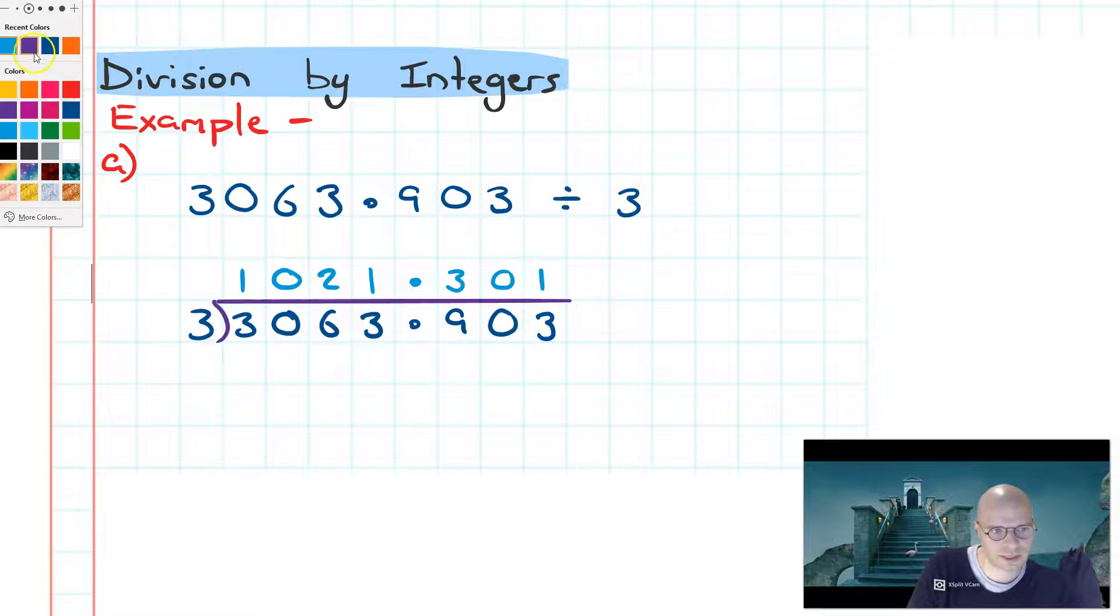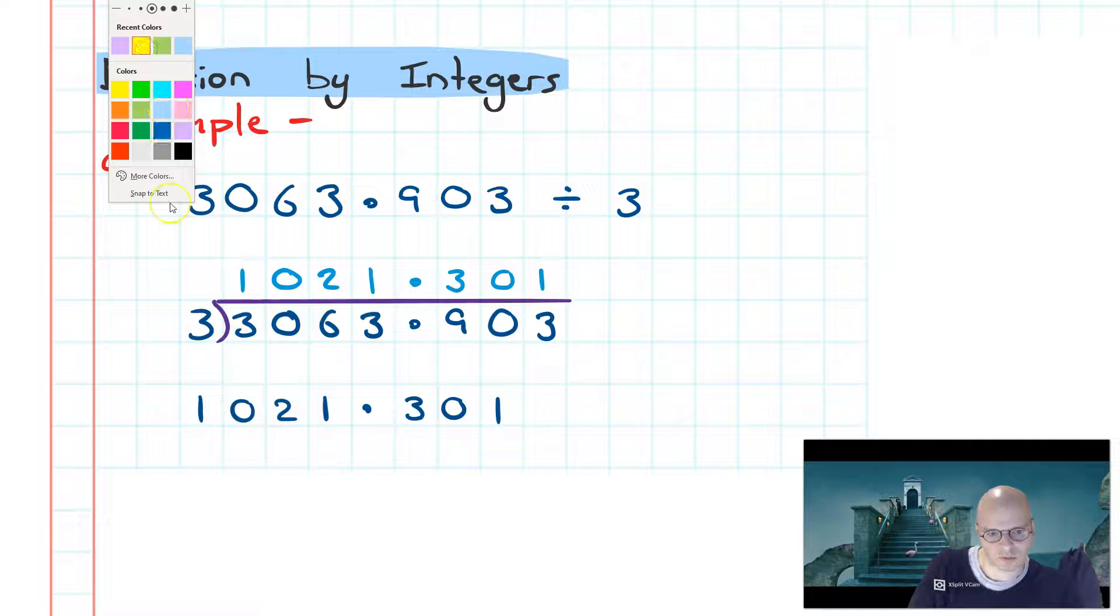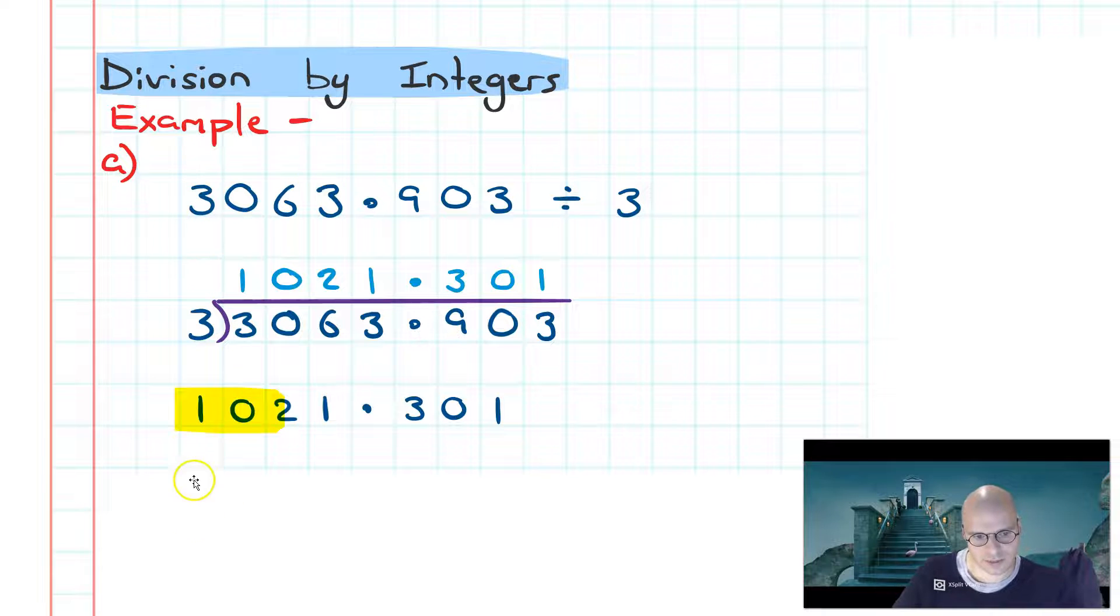So the quotient or result of this division is 1021.301. This is a nice simple example because everything fits in quite nice and tidy. There's no carries, no borrowing, no dropping down. Nice and simple. All right, let's spice it up a little.